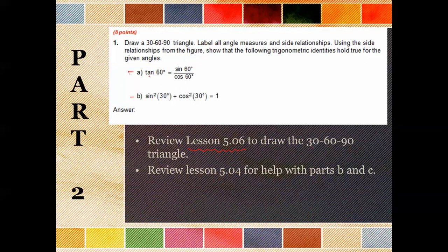Just in your calculator, figure out what tangent 60 is, what sine 60 is divided by cosine 60, and just show your work. Find the sine of 30 and square it, the cosine of 30 and square it, add them together to show that it would equal 1. That's all you're doing on number 1.